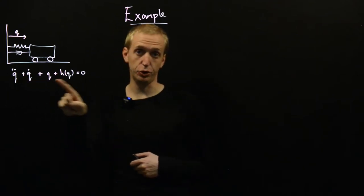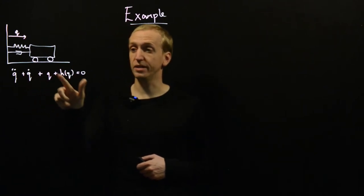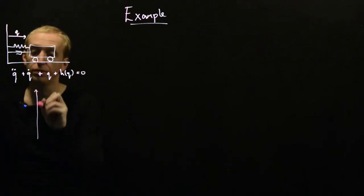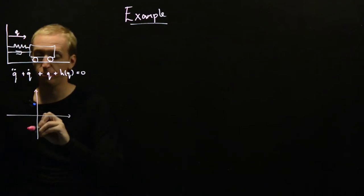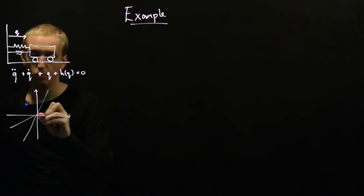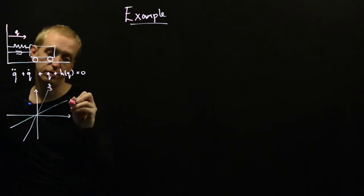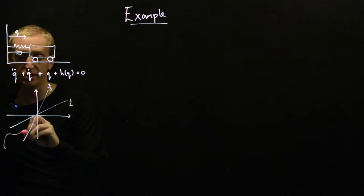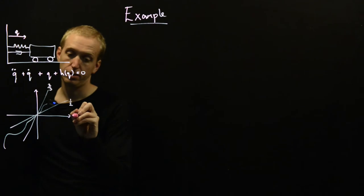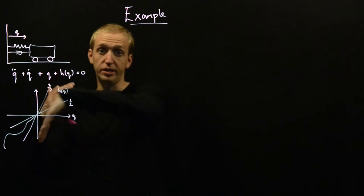We're going to assume that it obeys this differential equation: q̈ + q̇ + q + h(q) = 0, where h(q) is our nonlinear function. We don't know what this is, but we suppose that it lies within a sector where the slopes are two-thirds and one-half. So h(q) is some nonlinear function that passes through the origin, and the nonlinearity always lies within this sector here.